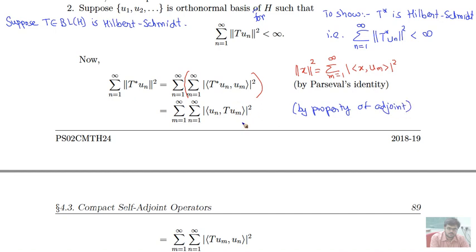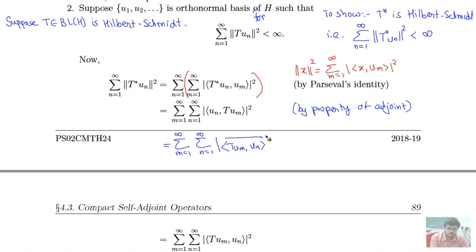Applying conjugate symmetry: the inner product of uₙ with T(uₘ) can be written with the order reversed, giving its conjugate. But since mod z equals mod z-bar, the conjugate inside the modulus does not matter. So we can write this as summation n equals 1 to infinity, summation m equals 1 to infinity, of mod of the inner product of T(uₘ) with uₙ, squared.